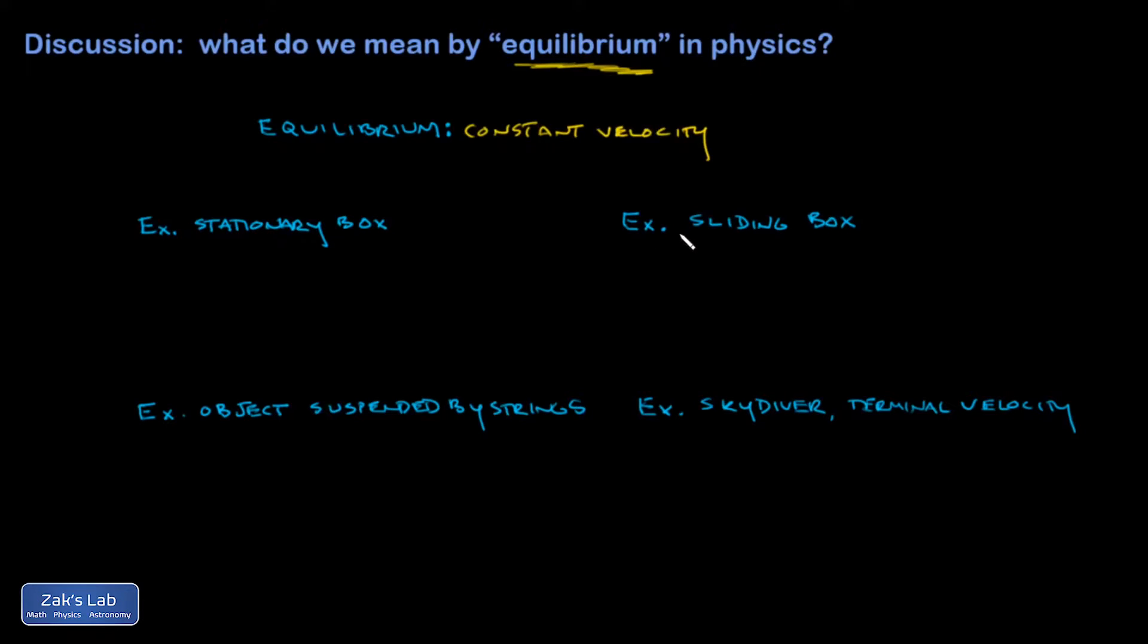That includes zero velocity, which is the most typical type of equilibrium problem, but a constant non-zero velocity also counts. What this means is a is zero.